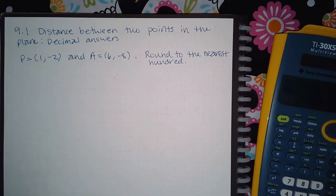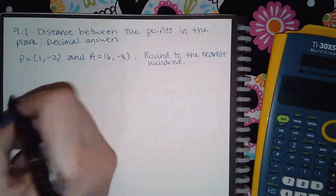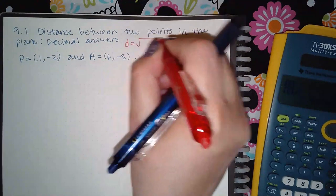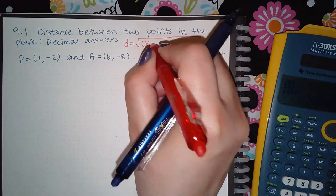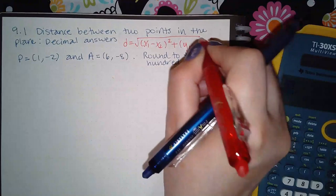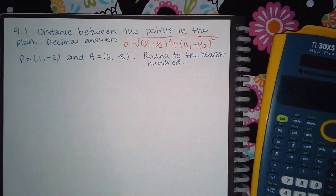Here we have 9.1, distance between two points in the plane with decimal answers. So we use the same formula as we did before, just making sure that we take the distance between the two x values and square it, plus the difference between the two y values and square that, and then take the square root of that result.